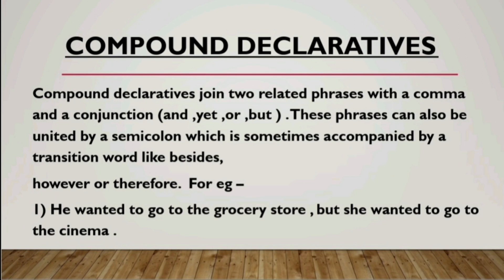These phrases can also be united by a semicolon. So instead of a comma, a semicolon could be added, and it could be accompanied by words like 'besides,' 'however,' 'therefore,' etc. So compound declaratives join two related phrases either with a comma and a conjunction, or with a semicolon accompanied by words like 'besides,' 'however,' and 'therefore.'